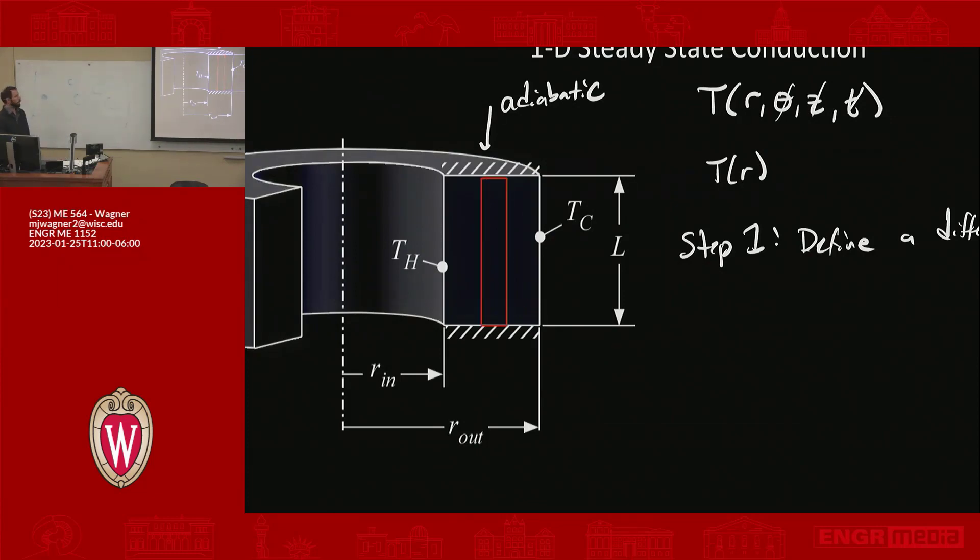It's because the only temperature gradient is in the radial direction. So I could have an infinite control volume in Z, in the Z coordinate, because I don't care about any gradient in that direction.